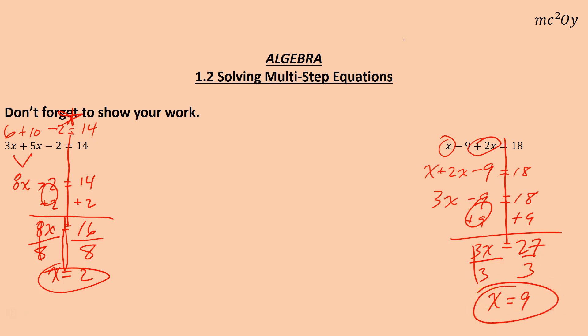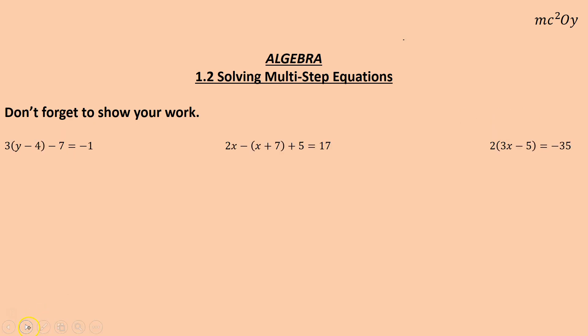And once again, checking it out. Plug 9 in there. We get 9 minus 9 plus 2 times 9 is 18. Equals, well, that's 0 plus 18, which is 18. So it checks out.